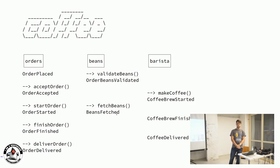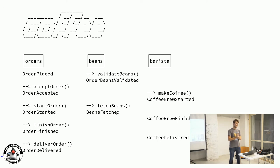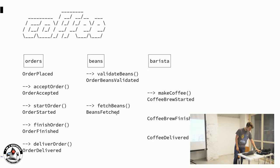Any questions so far? Yes — the question was: is this related to domain-driven design? Yes, it is. You deal with bounded contexts: the order, beans, and barista systems are separate applications, each a bounded context — everything in responsibility of that application, including these domain events. That's the relationship: you model domain events here. Very good question.